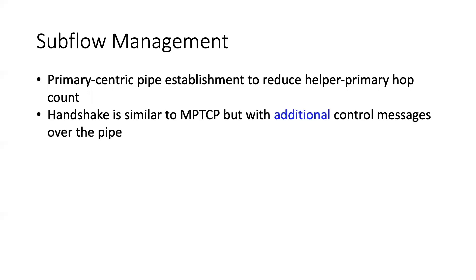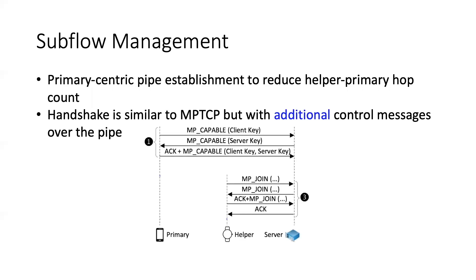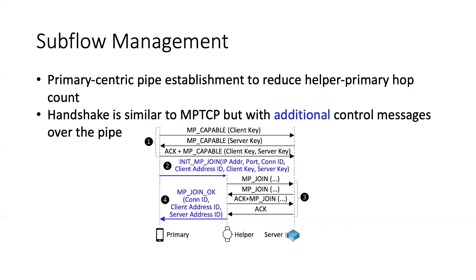The overall handshake procedure in MPBound follows that in MPTCP, with additional control messages over PEPs to coordinate with the helpers. Specifically, the primary sends an init MP-join message with the necessary client and server information to the helper, allowing it to establish the second subflow through an MP-join message. When the subflow is established, an MP-join OK message is returned to the primary as an acknowledgement.